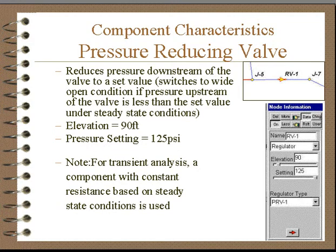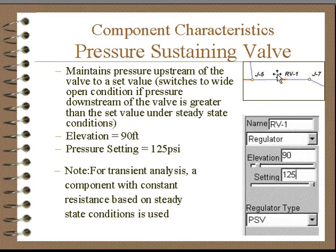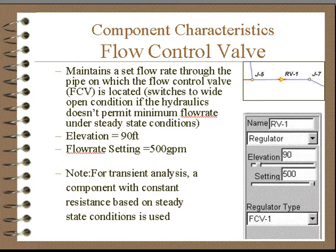We can also handle pressure reducing valves and regulating valves — these are all handled the same way. The steady state calculations are made and then the resistance of the valve is calculated based on the steady state condition, and a constant resistance is used. That's true for a pressure reducing valve and for a pressure sustaining valve. Whatever the pressure drop is at the given flow, we calculate the resistance and utilize that resistance.